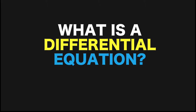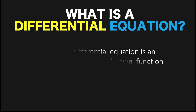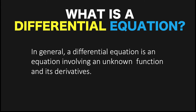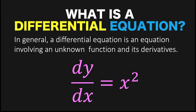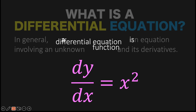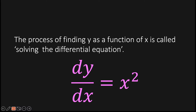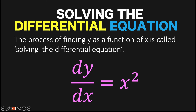So what is a differential equation? A differential equation is simply an equation containing an unknown function and its derivative. An example is dy over dx equals x squared. Here the derivative is dy over dx, and the unknown function that gives this derivative is y, or y of x. We know the derivative, and we are solving for the function that gives that derivative. The process of solving for that unknown function is called solving the differential equation.